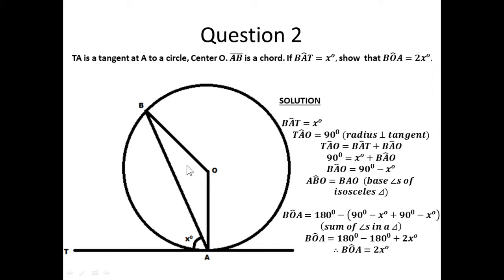To get this angle here, we add these two base angles and remove the sum from 180 degrees, because the sum of angles in a triangle is 180 degrees. If you add this plus this and remove it from 180 degrees, that will give us angle BOA. So, angle BOA is equal to 180 degrees minus the sum of these two angles.